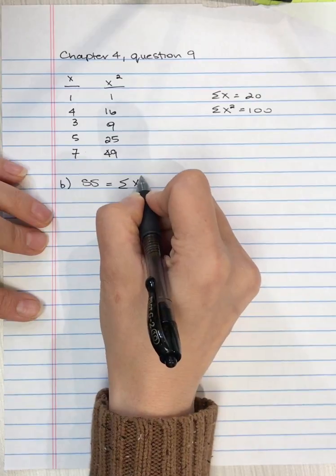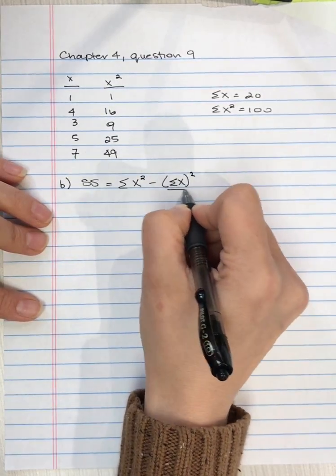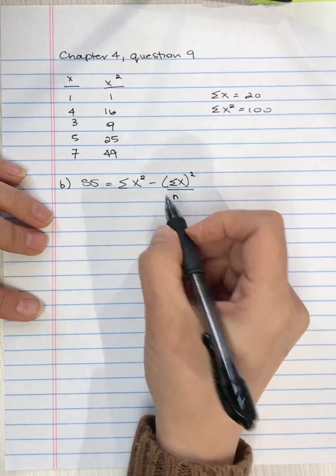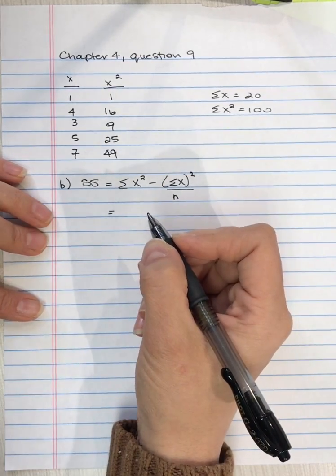We take the computational formula, divide by little n, because we have a sample now. At this point it's just semantics—minor changes in the symbols.